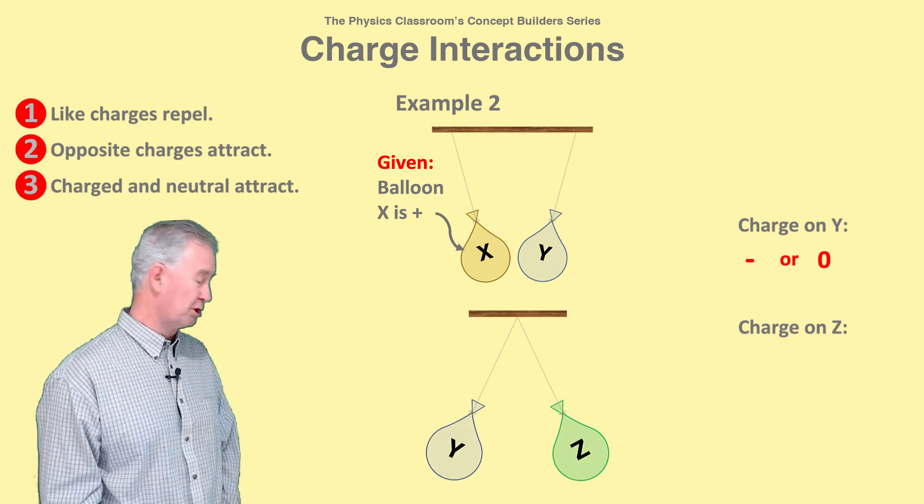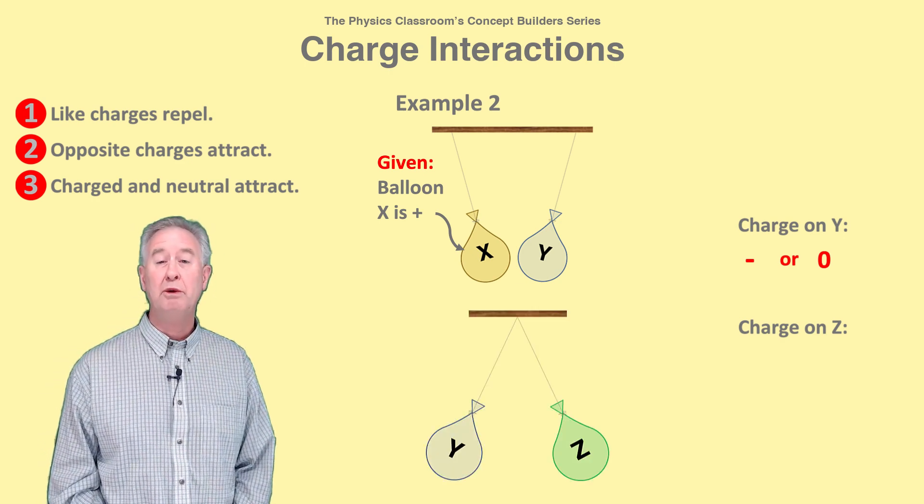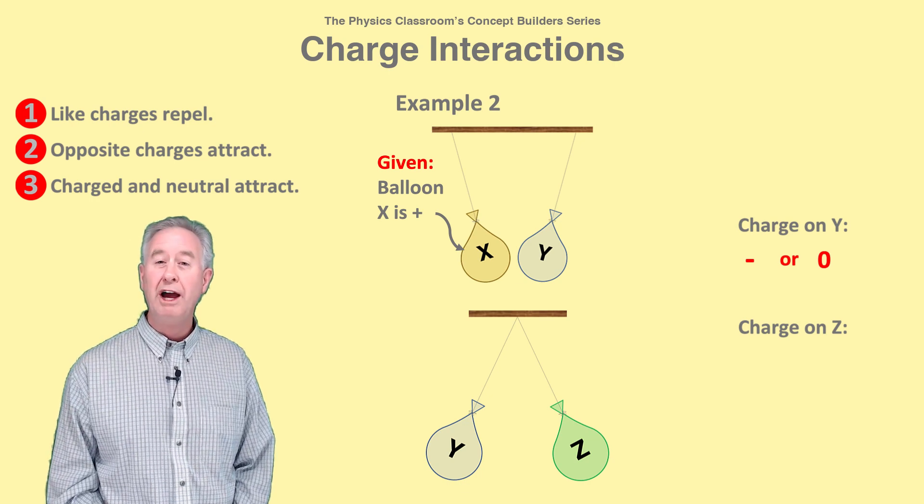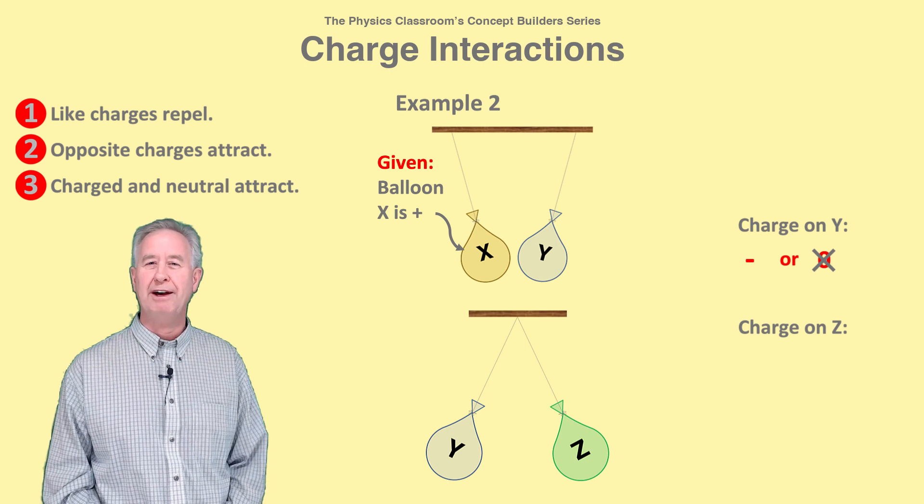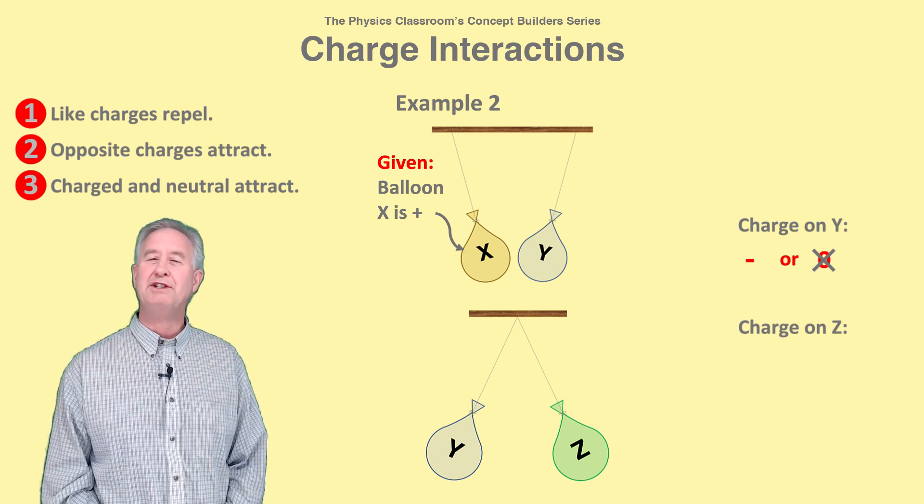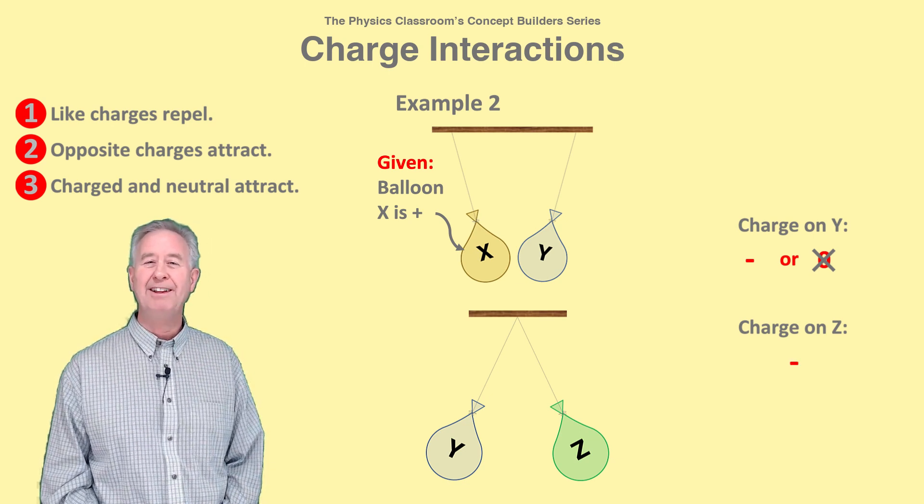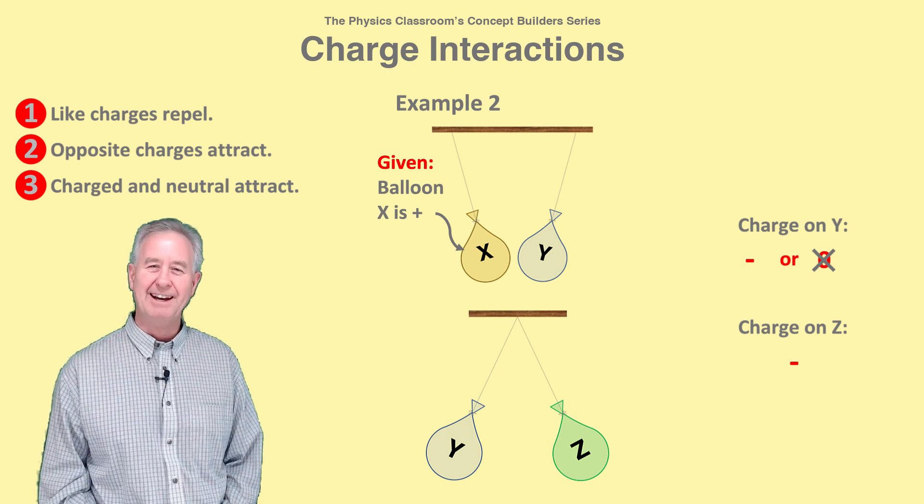But we also observe balloon Y and Z repelling each other, so Y must be charged since only like-charged objects repel. So balloon Y is negative, and since Y and Z repel, Z must also be negative.